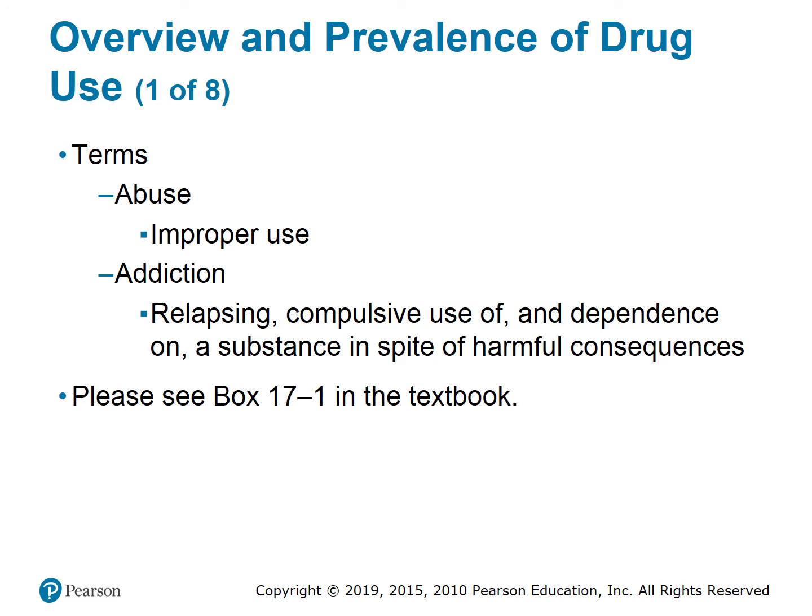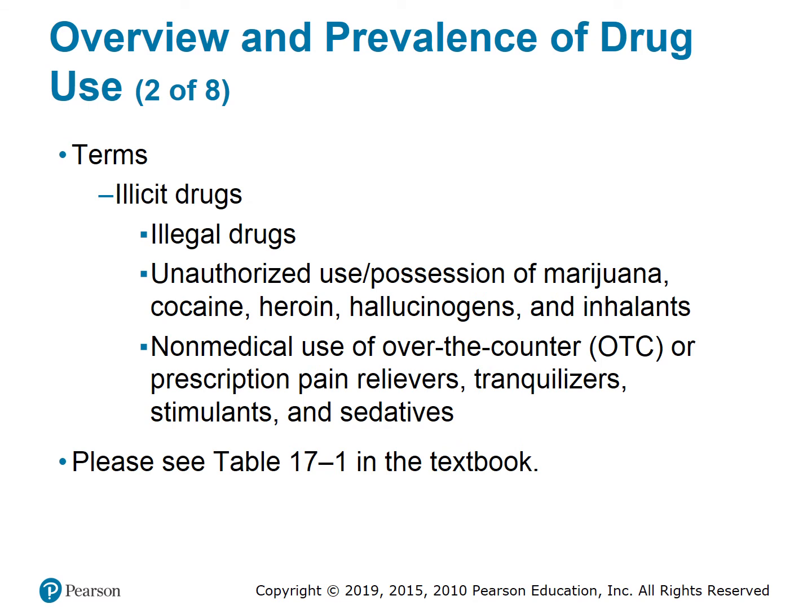For the overview and prevalence of drug use — key terms: abuse means improper use; addiction is relapsing, compulsive use of and dependence on a substance in spite of harmful consequences. Unauthorized use and possession of marijuana, cocaine, heroin, hallucinogens, and inhalants. Non-medical use of over-the-counter or prescription pain relievers, tranquilizers, stimulants, and sedatives.